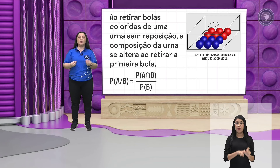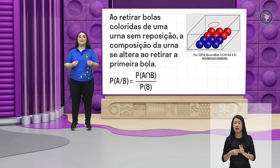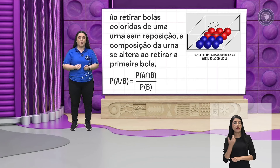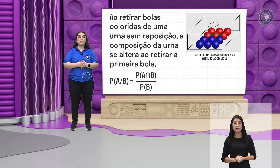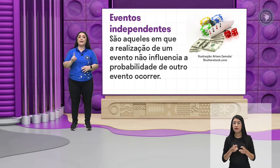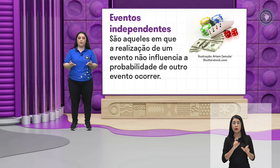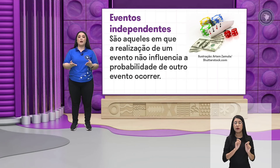Um evento vai depender do outro, ou seja, um evento vai influenciar na ocorrência do outro evento. Continuando, a gente vai verificar o que são eventos independentes. A gente viu eventos dependentes, quando um evento vai influenciar na ocorrência do outro.